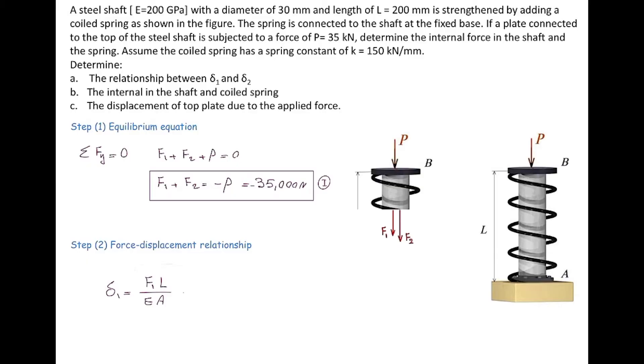L is given, modulus of elasticity for the shaft is given, and area could be calculated based on the diameter. Now I'm going to plug in the value and write down the deformation in terms of the unknown internal force F1.